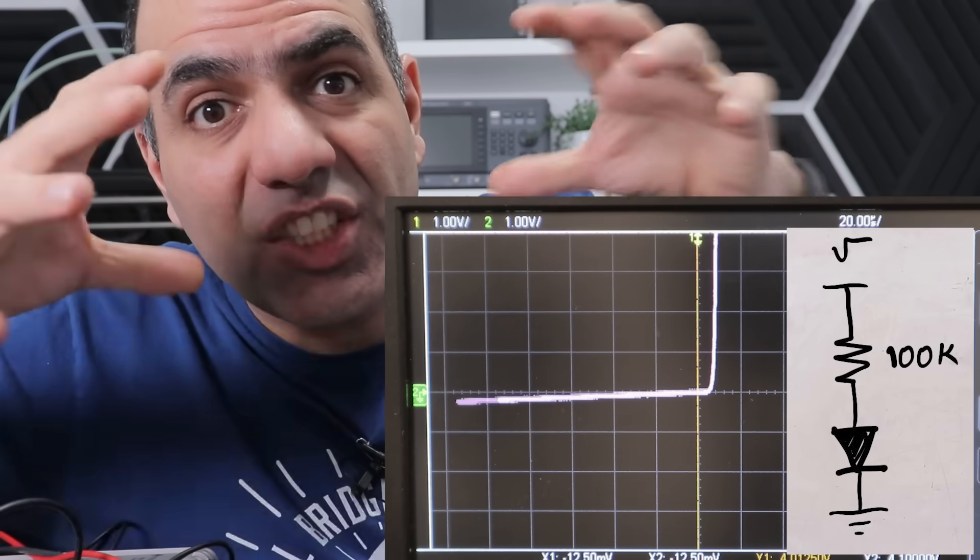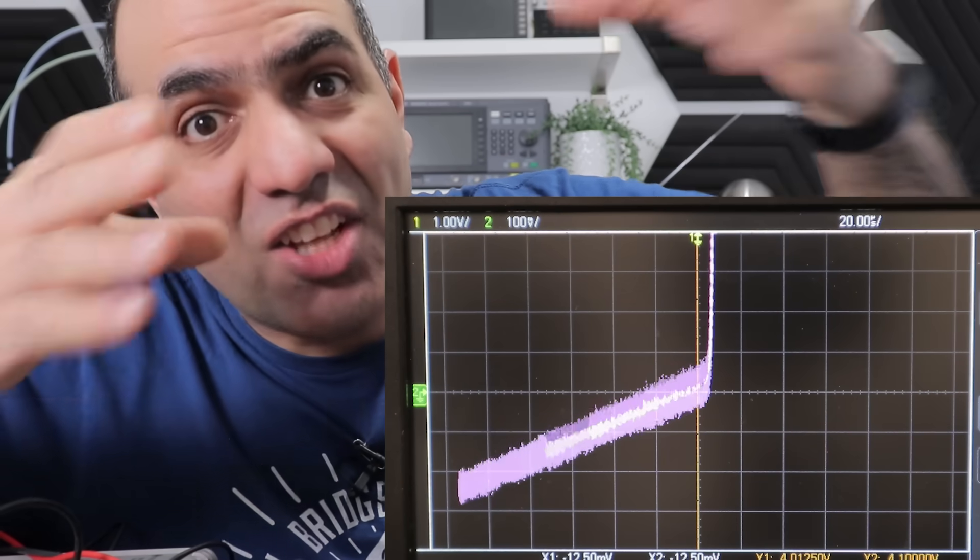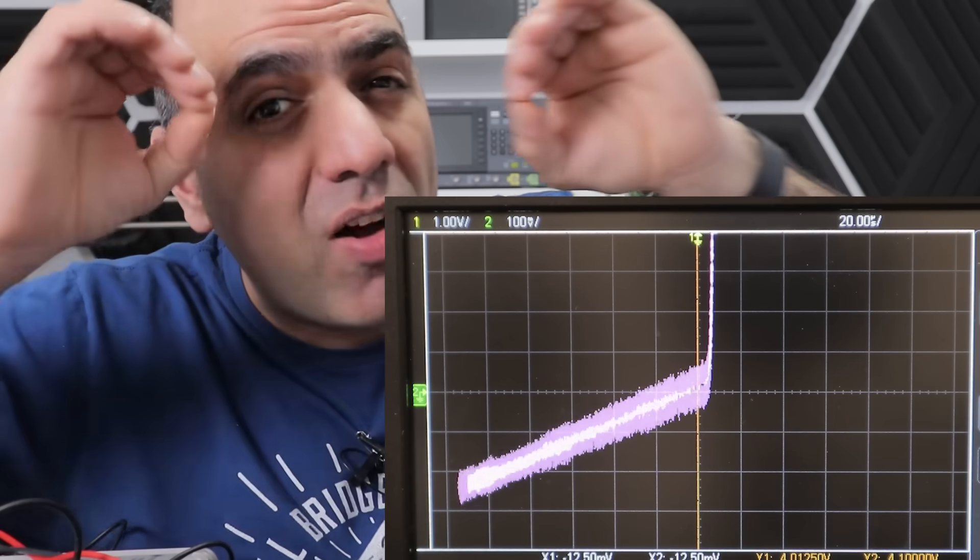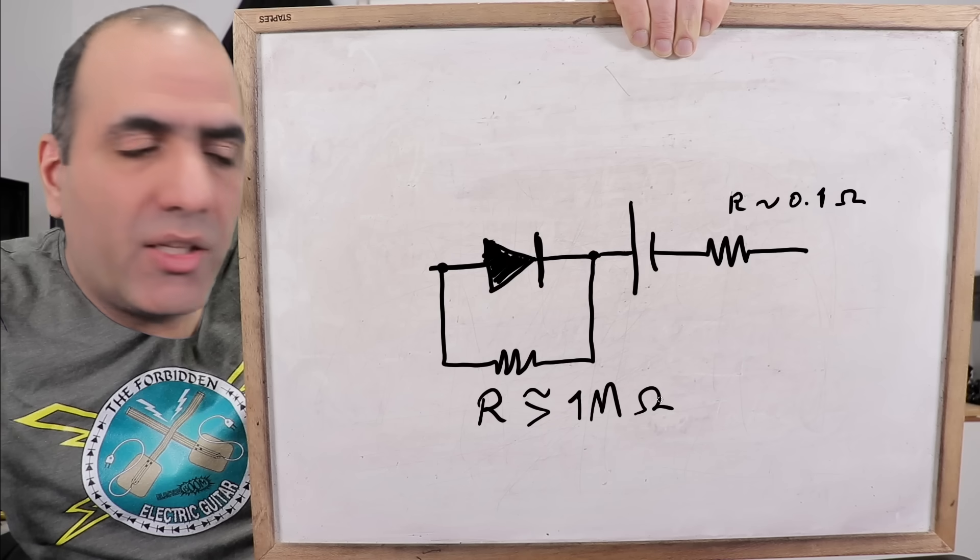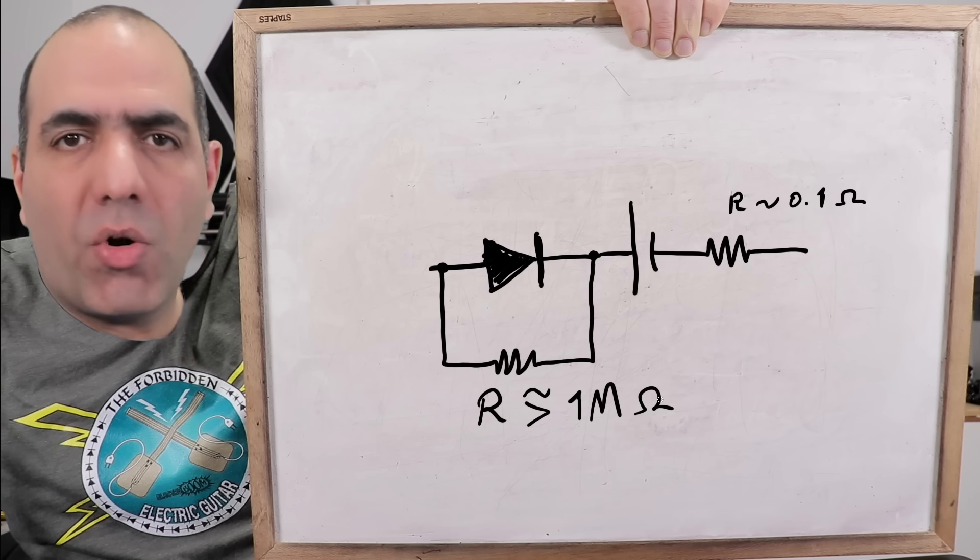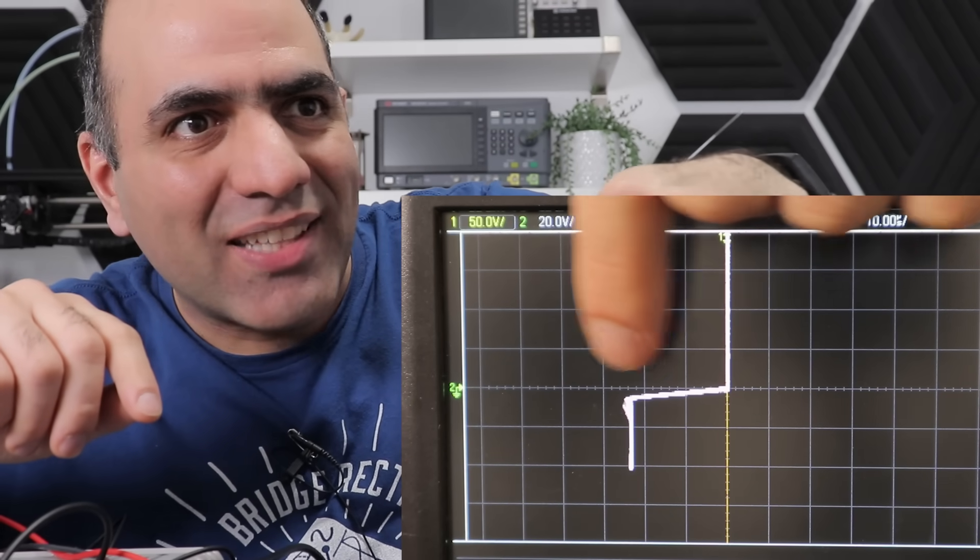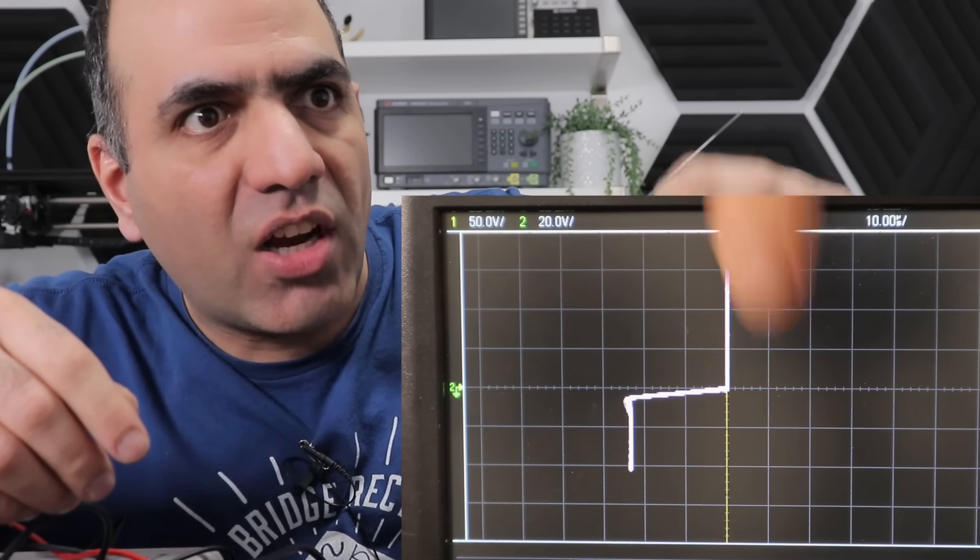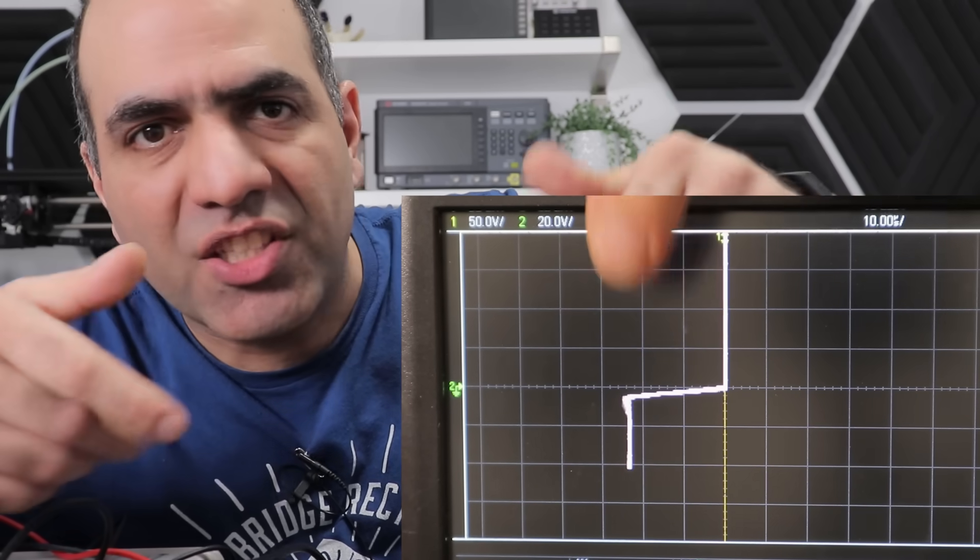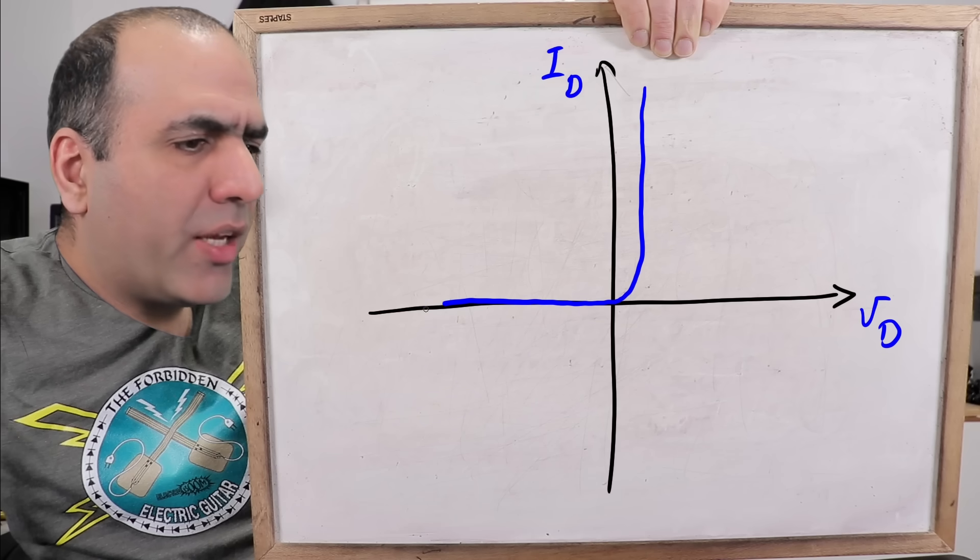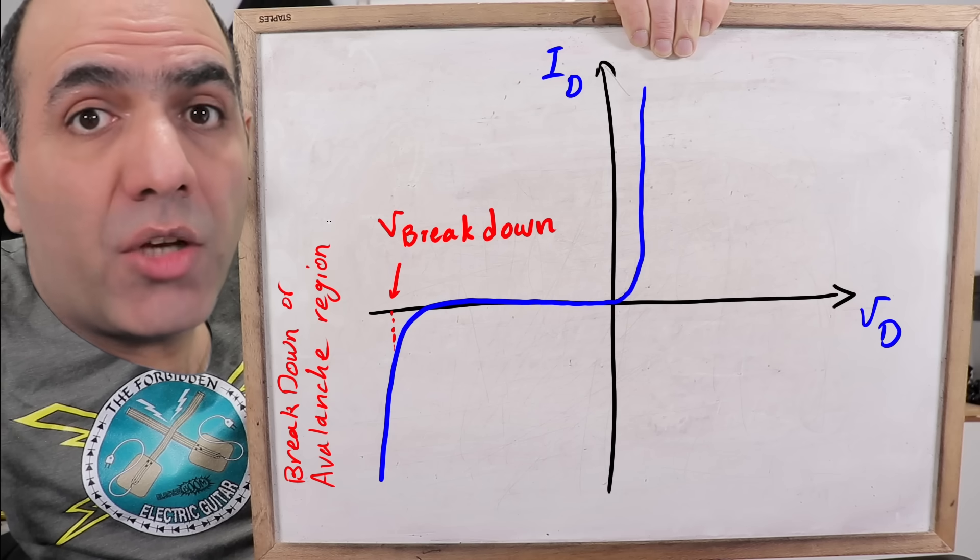Now we change the series resistance to 100K for more precision and let's zoom in on the current. Look at that. The current is not 0 in reverse voltage. There is a very small leakage current in reverse. So, we can add a very large resistor across the diode to model it. Although, the leakage current is typically so small, we can ignore it. This time, let's zoom out on the voltage. Look at that. The diode that's supposed to block current in reverse voltage is conducting large amounts of current when the voltage passes above some threshold. Around 100V in this case. The voltage where current starts flowing is called the breakdown voltage.